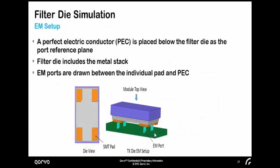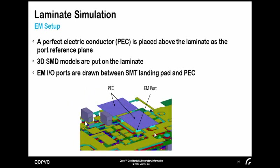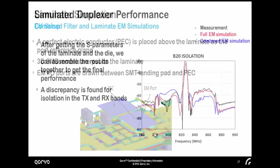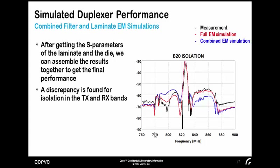To do this, first we do the filter die simulation. This plot shows the typical Qorvo WIP SMT filter die with the SMT pads. When we do this die simulation, we add a perfect E (PEC) below the filter die as the port reference. Then we define the ports and include the metal stack in the die. The same approach applies to the laminate simulation, where we add the PEC above the laminate as the port reference plane and add the 3D SMT models with defined ports. After we get the S-parameters of the laminate and the die, we assemble the results together to get the final duplexer performance.